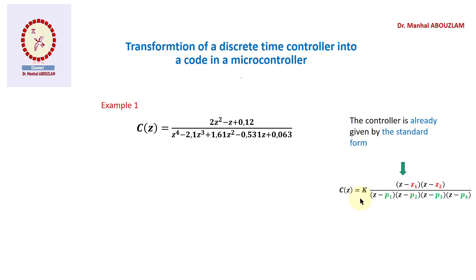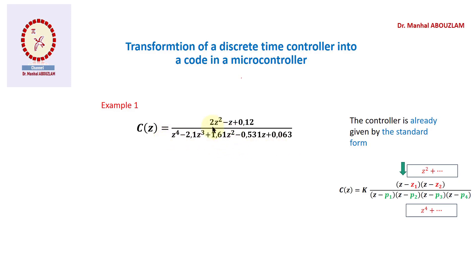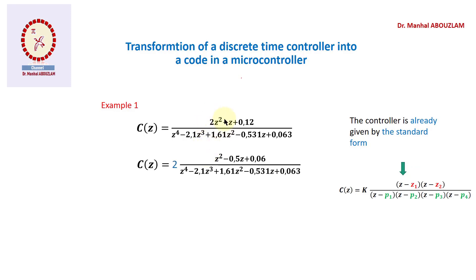If we multiply the polynomials we get a standard form where the coefficient of the first term is equal to one, and similarly for the denominator. For the denominator the coefficient of the term with the greatest degree is equal to one, so no problem. But for the numerator the coefficient of the term with the greatest degree is equal to two, so the numerator has to be divided by two, and we can see that the value of the gain k is equal to two.